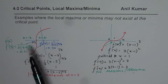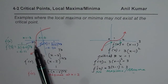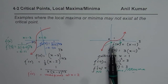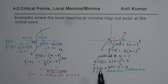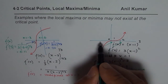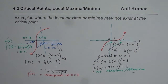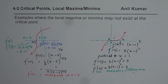So these are two conditions where a critical number may exist but local maximum or local minimum may not exist. Here is a case where the critical number exists because the derivative is undefined, and here is a case where the critical number is because the derivative is zero — meaning the tangent is parallel to the horizontal line. I hope that makes things absolutely clear. We will take a few more examples to give you more practice. Thank you and all the best.